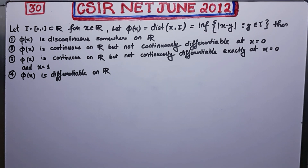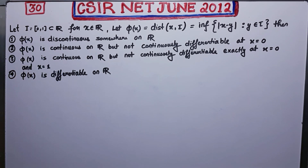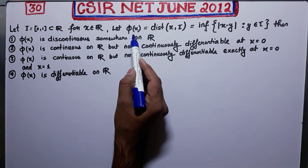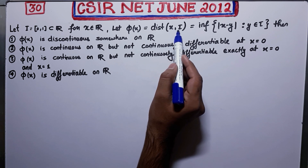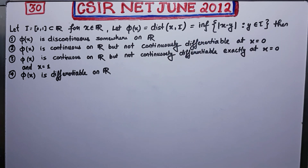Welcome back guys. I am here with you to solve problem number 30 of CSIR Net June 2012. Let us firstly read this question. It says I is a closed interval [0,1] and x belongs to ℝ. They are defining this function φ(x) equal to the distance of x from I — this is the definition for distance. What they are asking is about the continuity and differentiability of this given function φ.